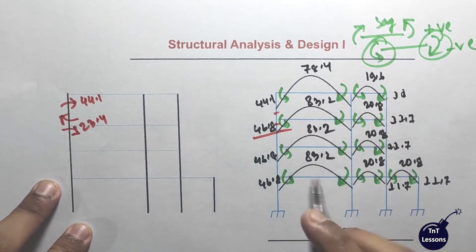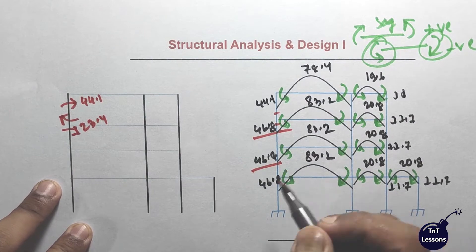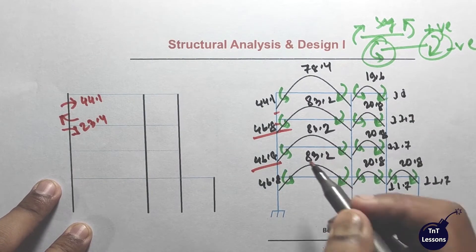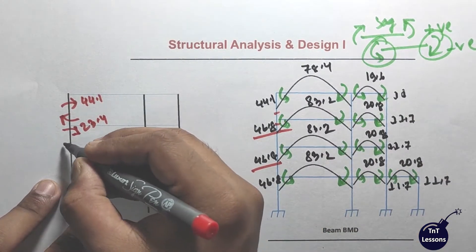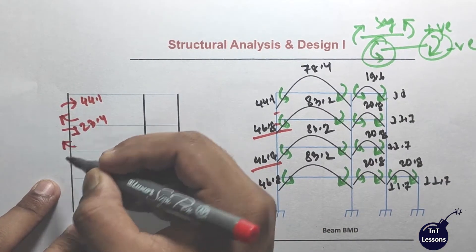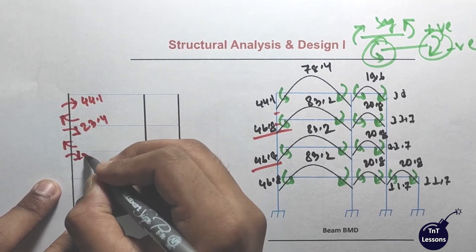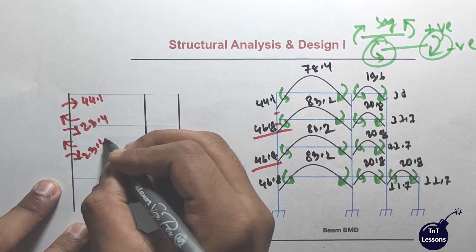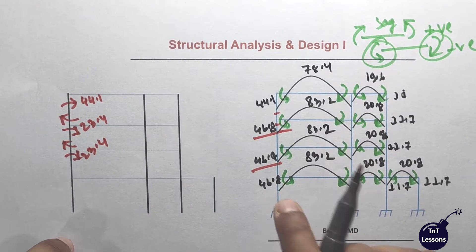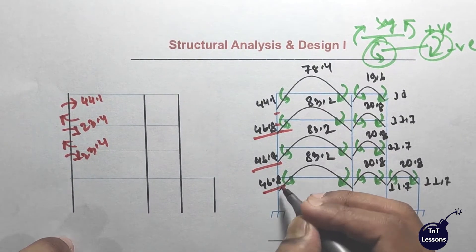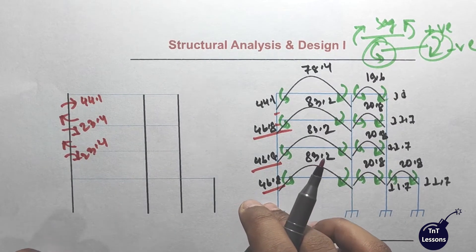At the same time, 46.8 kg. This is 46.8 kg. The clockwise is 23.4 kg. Now for this part, this part is 46.8 kg.